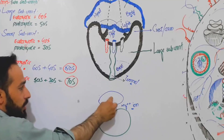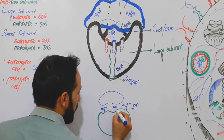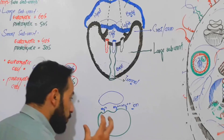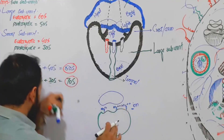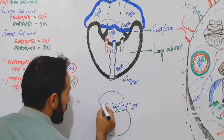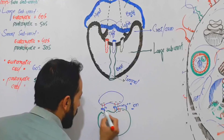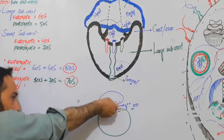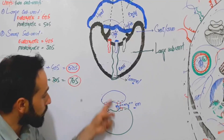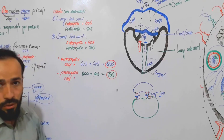The magnesium ion is responsible for holding the large sub-unit and small sub-unit close to each other. Inside the ribosomes we have RNA and proteins. These proteins carry negative charges, and since magnesium carries positive charges, bonds form between these positive and negative charges. So the magnesium ion is very important to hold the two sub-units together.